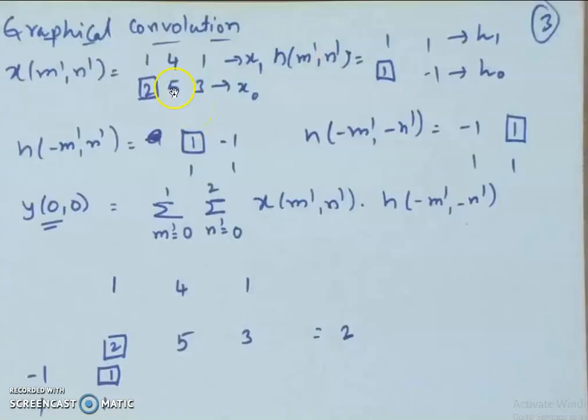Let us move to the next method: graphical convolution. In the one-dimensional case, we first fold the signal, then shift the signal, then multiply and add. We will do the same for two-dimensional convolution, except that we fold in both directions and shift in both directions — along rows and columns.